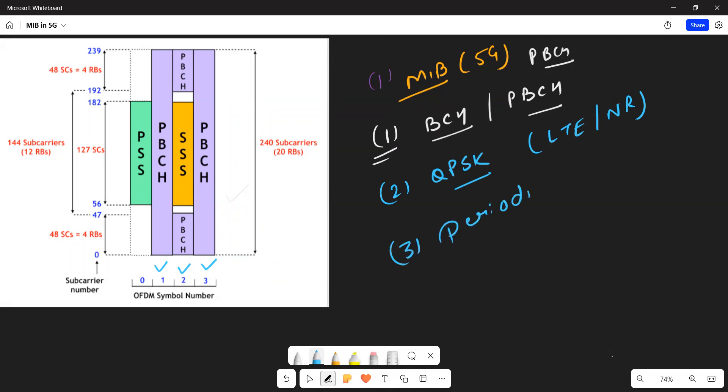Third point is the periodicity. Periodicity is 80 milliseconds here in NR, but in 4G we were having different. I would request you to comment what was the periodicity of MIB in LTE.